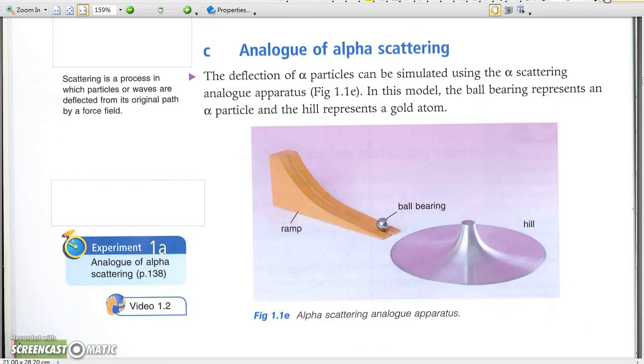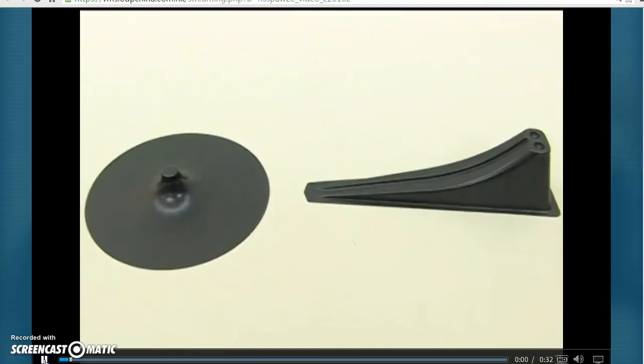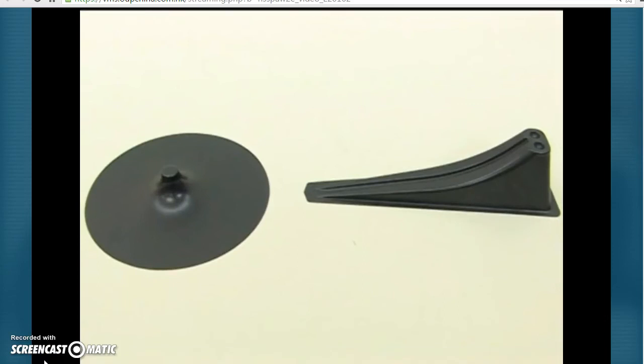Analog of alpha scattering. The scattering of alpha particles can be simulated using the analog apparatus. The hill represents a gold atom. The curvature of the hill resembles the change in electrical potential energy around a positive nucleus.